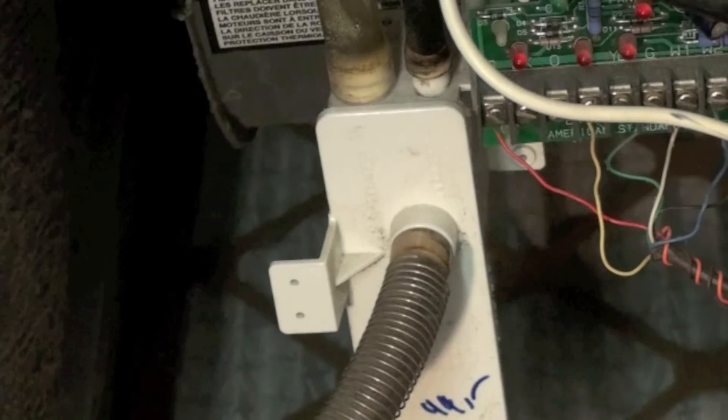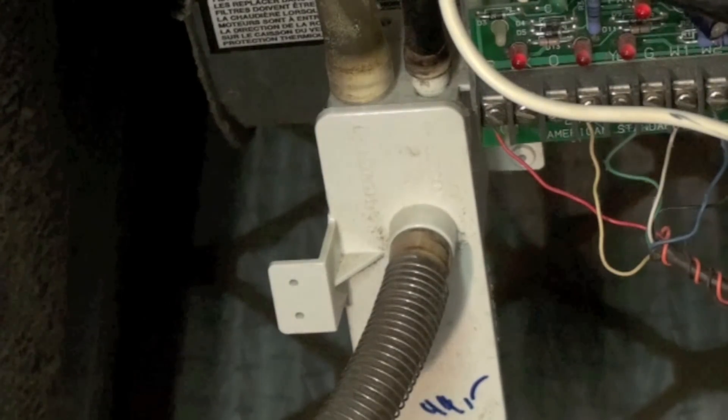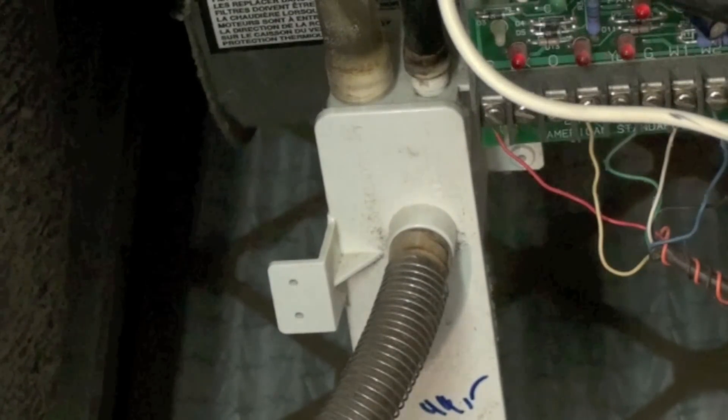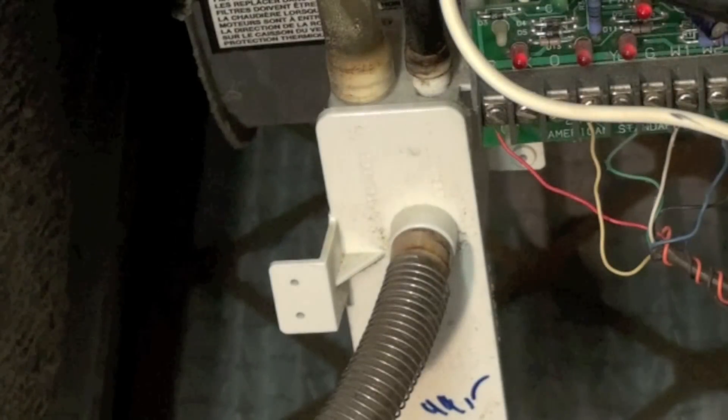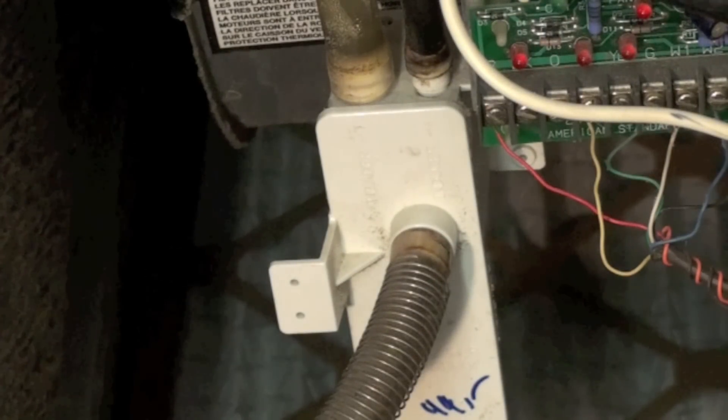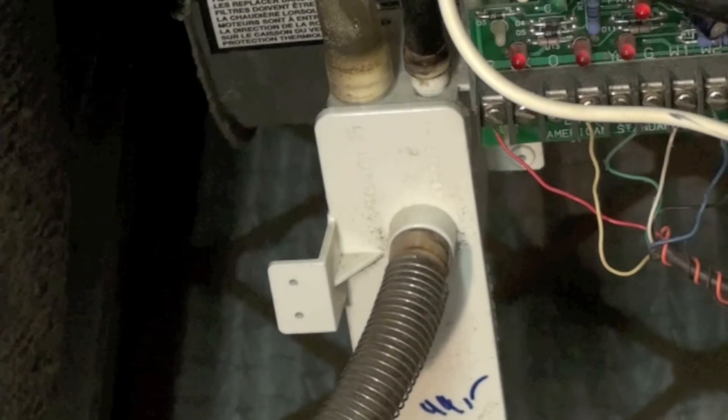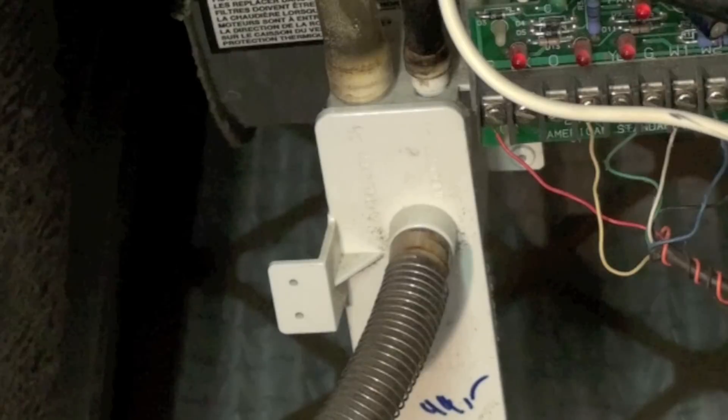So you would change the anticipator and usually it has something that says longer cycles and point it towards longer cycles. Move it about a quarter inch, see if that solves it. If it doesn't, move it another quarter inch. And that's about it for short cycling on gas furnaces. Simple things that you can check. Some of them will involve some expensive repairs.